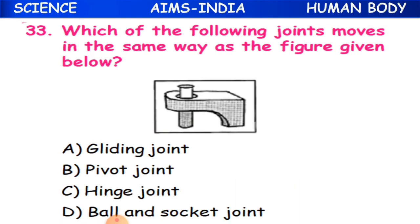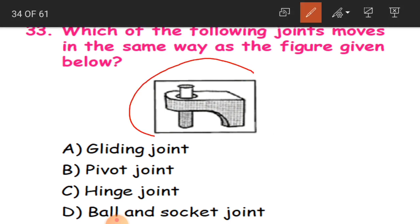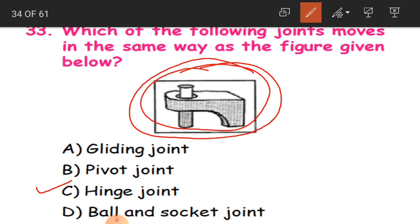Question 33: Which of the following joints moves in the same way as the figure given below? The picture shows movement just like a hinge joint, similar to our elbow. That is why C is the correct answer - it matches with the hinge joint.